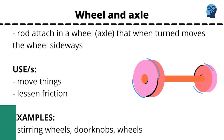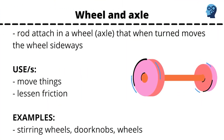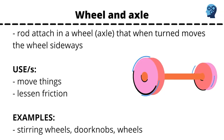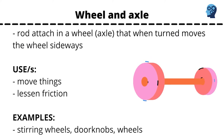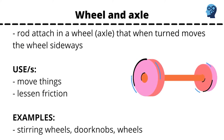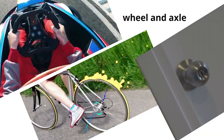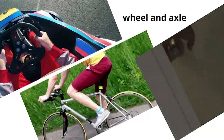Wheel and Axle. An axle is a rod that goes through the wheel. This lets the wheel turn. It is easier to move things from place to place using the wheel and axle. Steering wheels, doorknobs, and bicycle wheels are examples of wheel and axle.